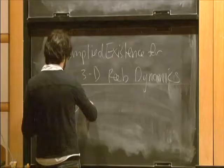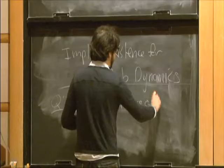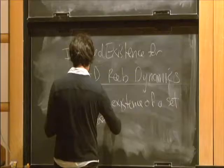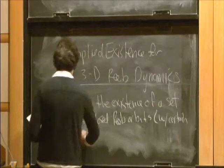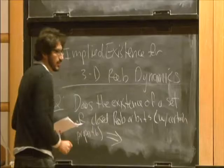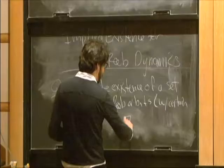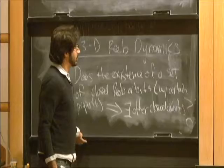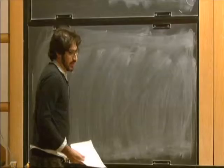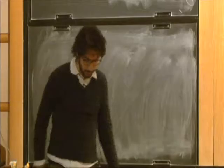Does the existence of a set of closed Reeb orbits — usually with certain properties — imply the existence of other Reeb orbits? So if you know that there are certain Reeb orbits, can you deduce the existence of other Reeb orbits? This is the question I'm going to try to address, and mostly I'm going to illustrate it with a particular example.